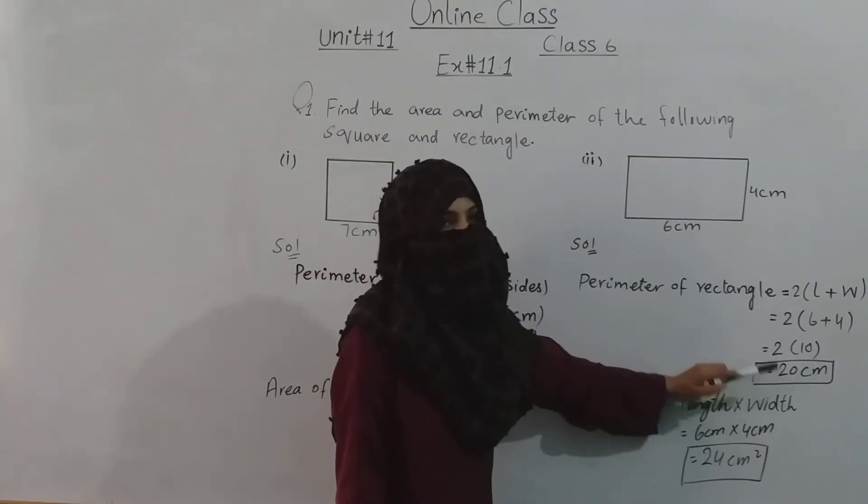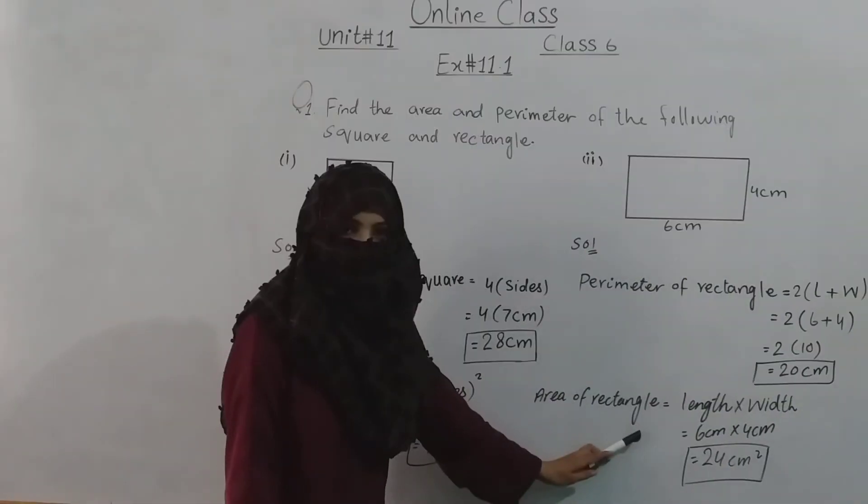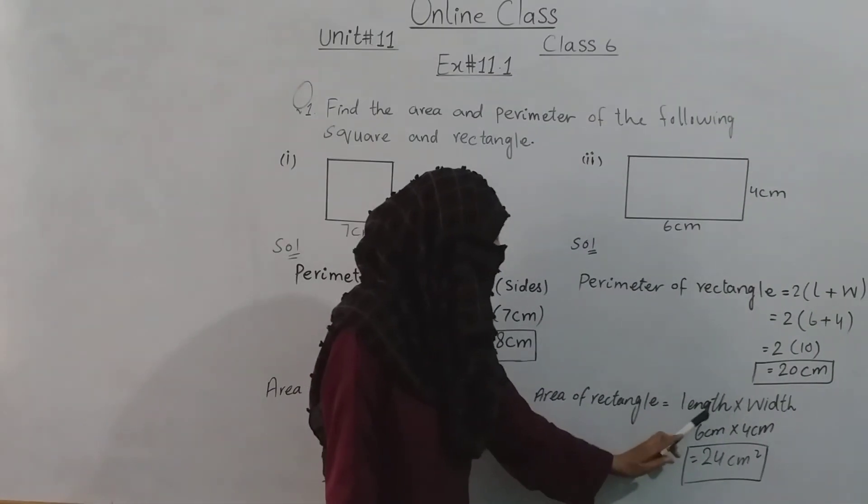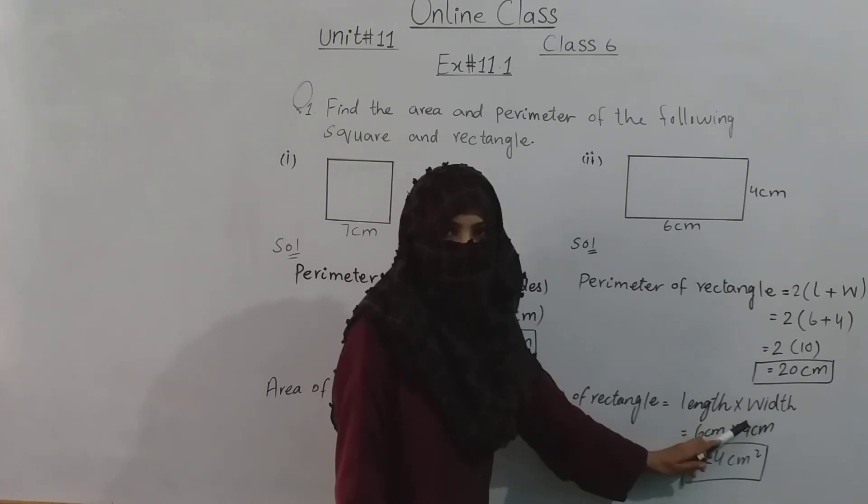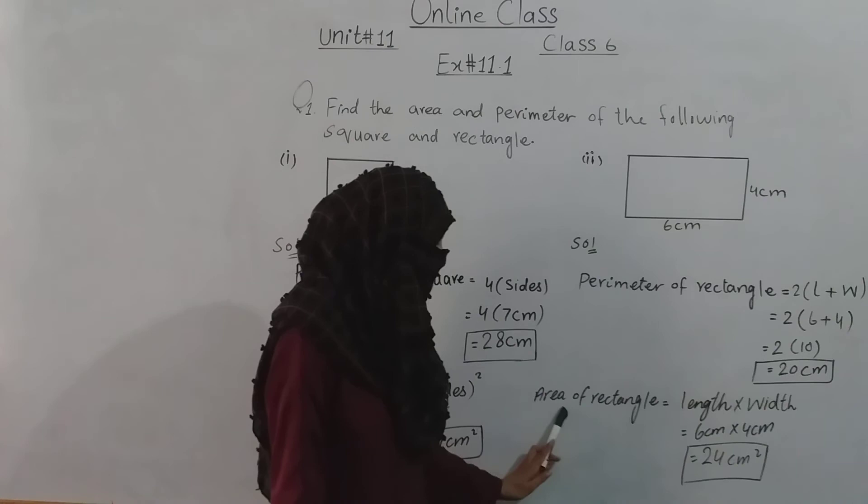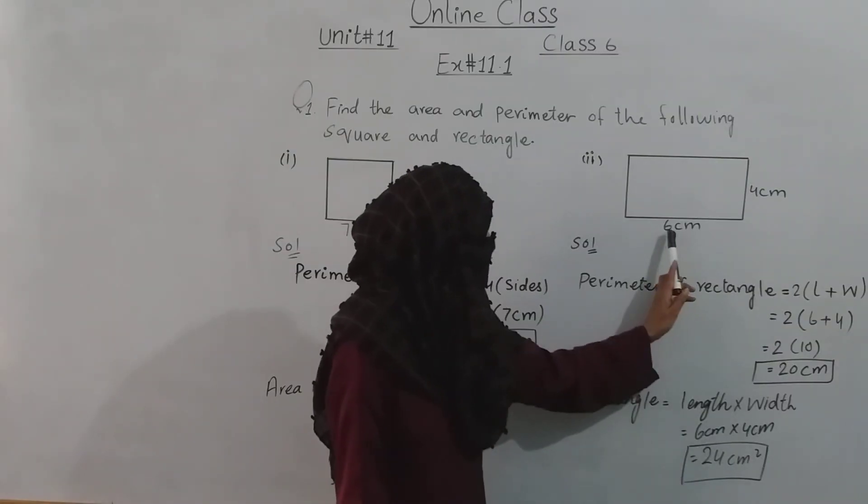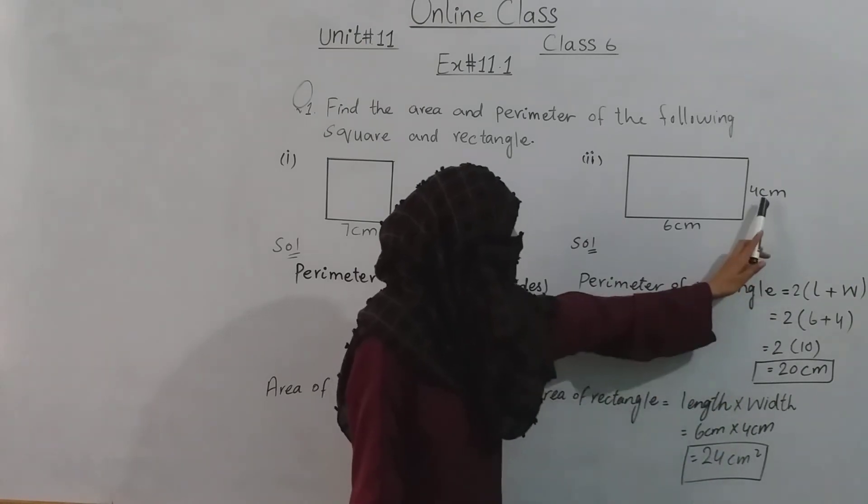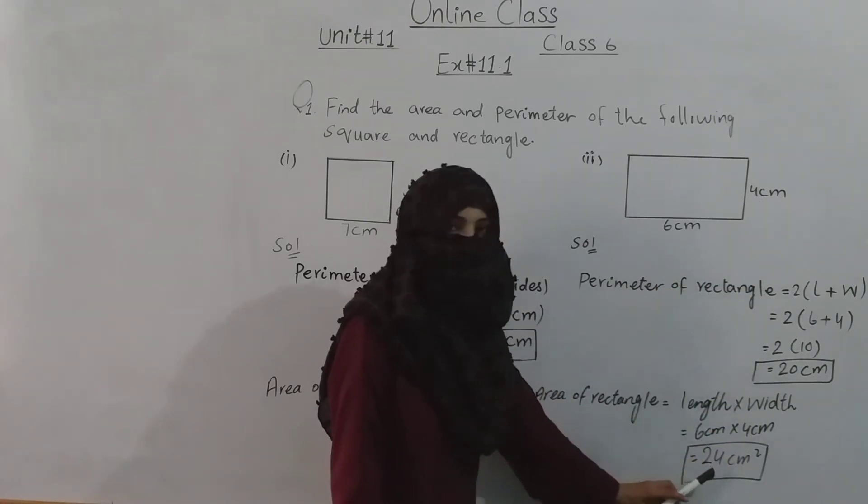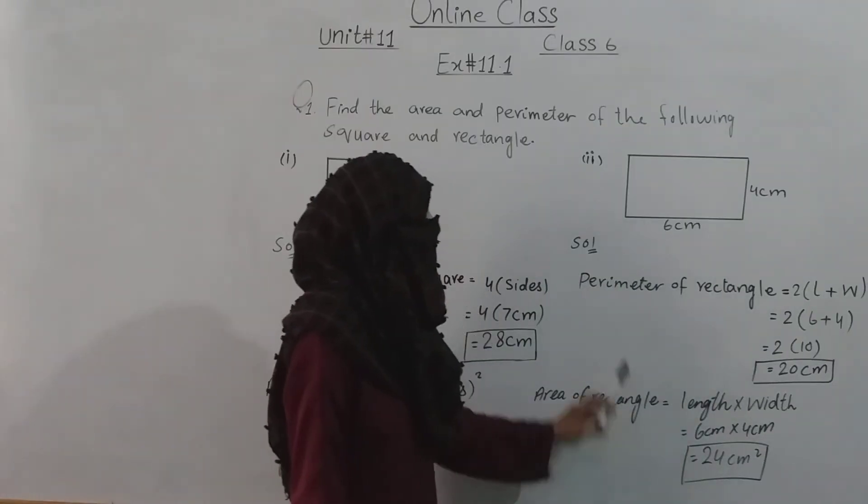Now we need to find its area. The formula for area of rectangle is length multiply by width. The length is six centimeters and width is four centimeters. Six times four equals twenty four. So the area is twenty four centimeter square.